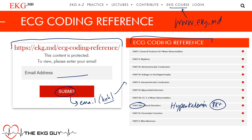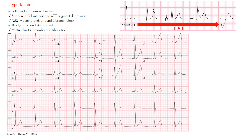For hyperkalemia, some EKG findings are based on potassium levels. As potassium increases from normal levels, we get different EKG changes. At normal levels, you see a normal P wave, QRS complex, and T wave. One of the first changes in mild hyperkalemia is pointed T waves — these T waves become upright and pointed. The best leads to see these are the anterior precordial leads, roughly V2 to V5.